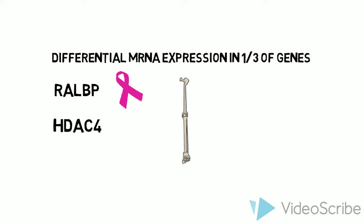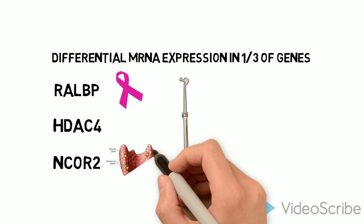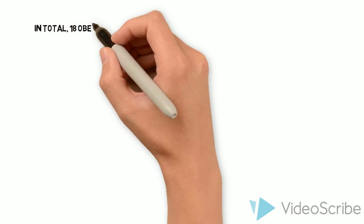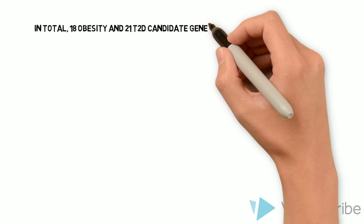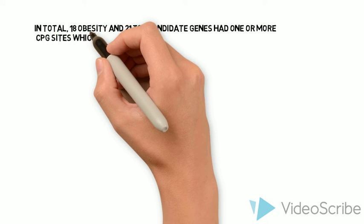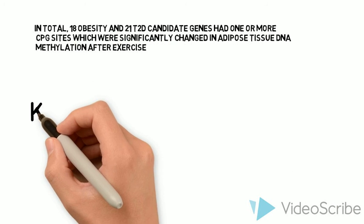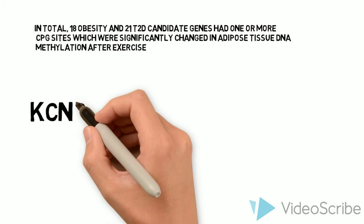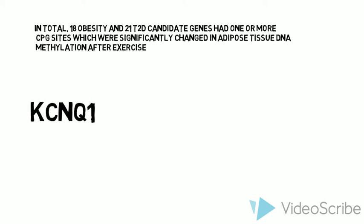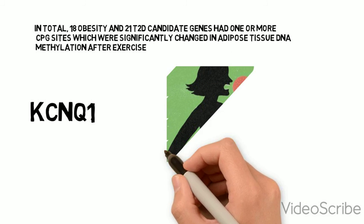Results showed in total 18 obesity and 21 candidate genes had one or more CPG sites, which were significantly changed in adipose tissue DNA methylation after the exercise intervention, including a gene known to be linked to obesity inheritance from parents and a gene known to increase the risk of contracting obesity over time.